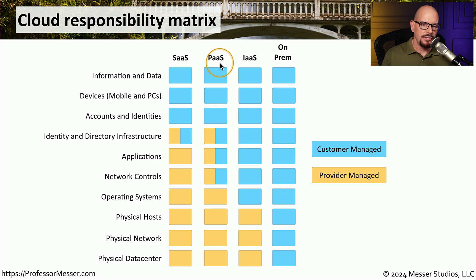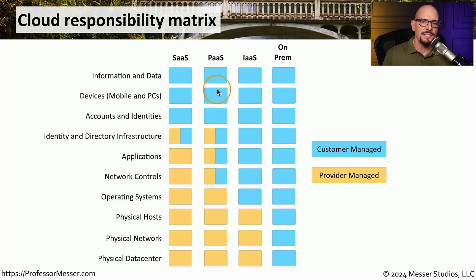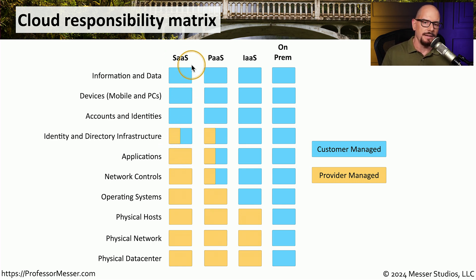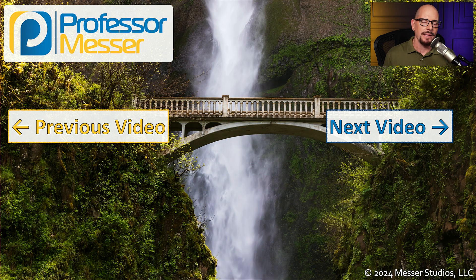With platform as a service, you can see that network controls, applications, and the identity and directory infrastructure may be shared between the customer and the cloud provider. But you'd still be responsible for the accounts, devices, and the information and data. With software as a service, much more of these are provided by the provider themselves. For example, everything associated with the applications is clearly in the responsibility of the provider, and everything above that would still be the responsibility of the customer. So depending on the type of infrastructure you want and the type of responsibility you're willing to take on, you'll need to pick the right cloud model for your application deployment.